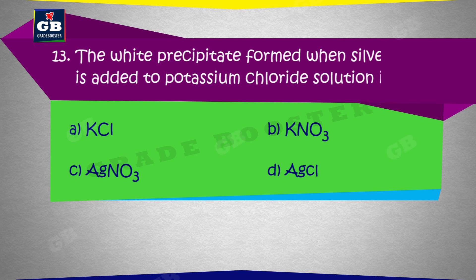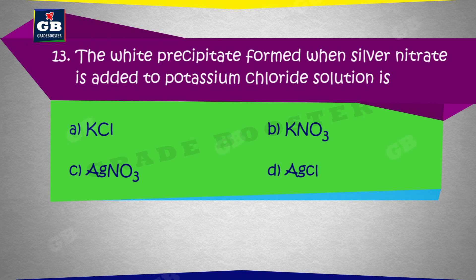The white precipitate formed when silver nitrate is added to potassium chloride solution is: A. KCl, B. KNO3, C. AgNO3, D. AgCl.